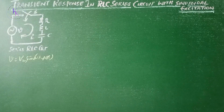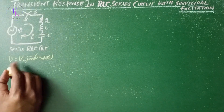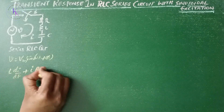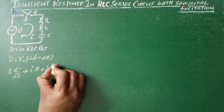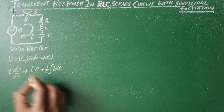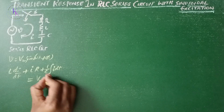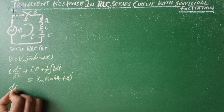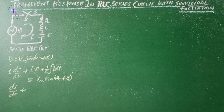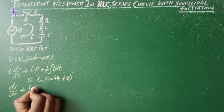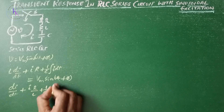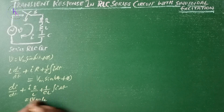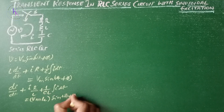Applying KVL for this circuit we get: L·di/dt + iR + (1/C)∫i dt = V = Vm sin(ωt + φ). Dividing the whole equation by L gives: di/dt + i·(R/L) + (1/CL)∫i dt = (Vm/L)·sin(ωt + φ).